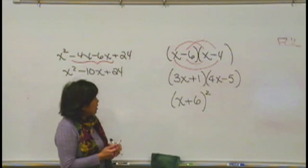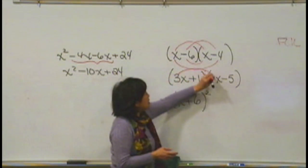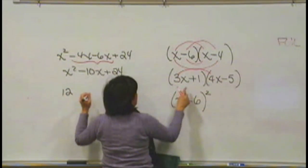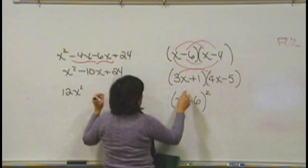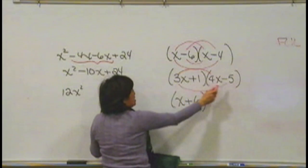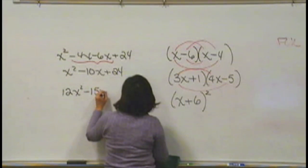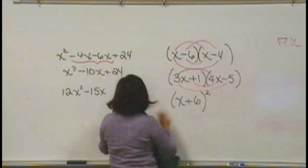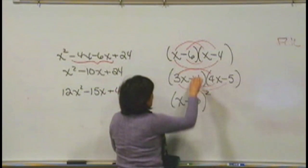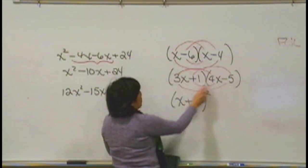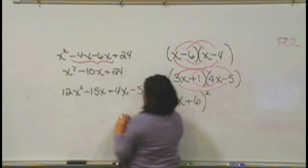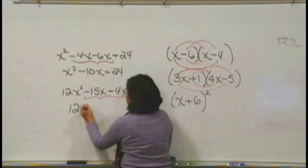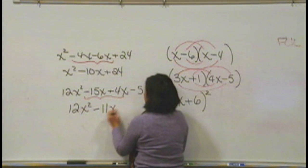Let's do the second one the same way. We'll multiply the first ones together. So, we have 3 times 4, 12, and then XX, in other words, x squared. We'll multiply the outside ones together. 3 times negative 5 is negative 15, so we have negative 15x. We'll multiply the inside ones together. 1 times 4 is 4, so we have 4x. And finally, we'll multiply the last ones together. 1 times negative 5 is negative 5. Again, we have similar terms right here in the middle. Our final answer is going to be 12x squared minus 11x minus 5.